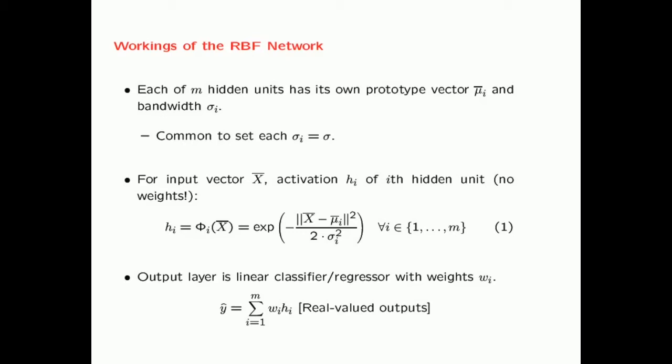The way the activations of the hidden units are computed is that for each input vector x, the activation h_i of a hidden unit is given by the Gaussian RBF similarity of the input to the prototype vector of that specific hidden unit. Think of a hidden unit as a specific region in the space — a densely populated region — and the hidden unit gets activated if the point lies in that region.